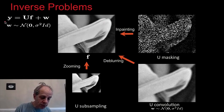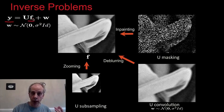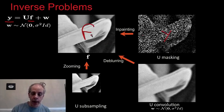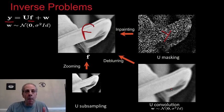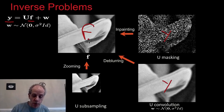We have an observation Y from which we want to recover image F. The image F has been deteriorated by operator U with additive Gaussian noise. The operator U can be masking, where some pixels are let through and some are blocked — that's in-painting. U can be a convolution, blurring the image, and we want to deblur to recover F. Or we can do subsampling, going from a small image to a larger image — that's zooming.